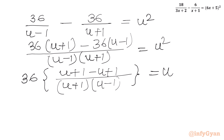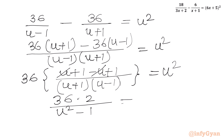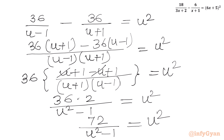The right-hand side is u squared. After simplification, the plus and minus u terms cancel, leaving 72 in the numerator. Using the difference of two squares formula, the denominator becomes u² − 1. So we get 72 over (u² − 1) equals u².